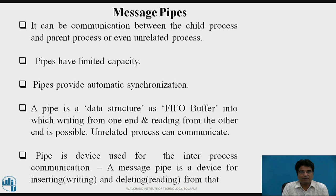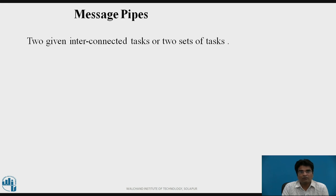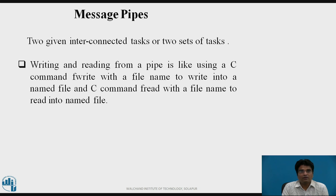A pipe is a device used for inter-process communication. A message pipe is a device for inserting or writing and deleting — that is, reading — from two given interconnected tasks or two sets of tasks. Writing and reading from a pipe is like using the C command fwrite with a file name to write into a named file, and the C command fread with a file name to read from a named file.